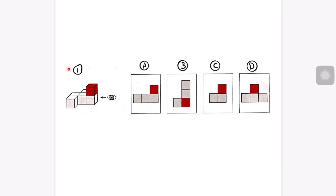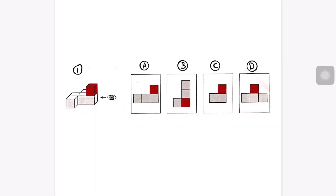Basically, what you have to do is: you will get a 3D shape on the left-hand side, and you look at it in a specific direction. In this question, we're looking at it from the right-hand side. When looking in that direction, we're going to choose from the given options which shape we would see from a 2D perspective.